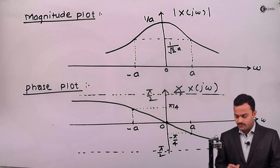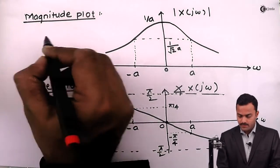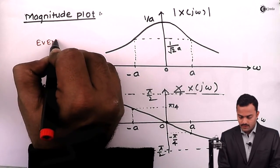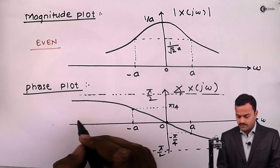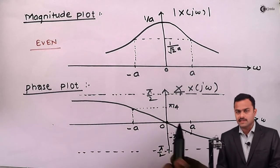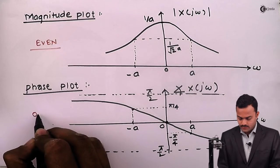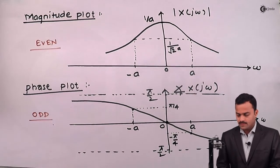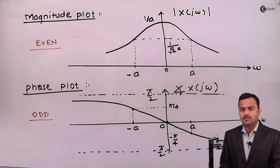The conclusion is that the magnitude plot is symmetric about the y-axis, so it is an even function. The phase plot passes through the origin and exists in opposite quadrants, so the phase plot is always an odd function. This is the end of problem number one. Thank you.